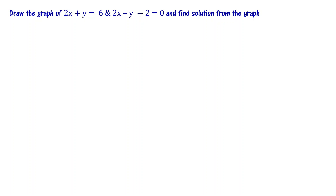Draw the graph of 2x plus y equal to 6 and 2x minus y plus 2 equal to 0, and find the solution from the graph. The graphical method uses a pair of linear equations in two variables. First, we have to generate data corresponding to these equations.